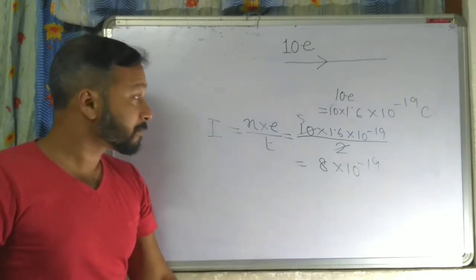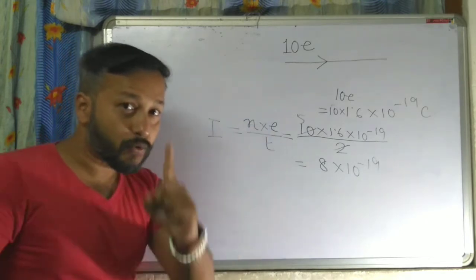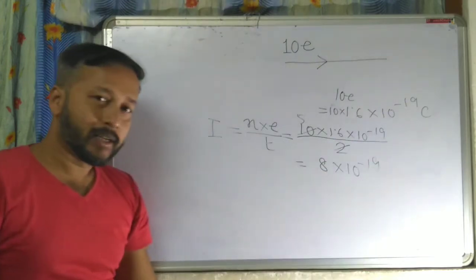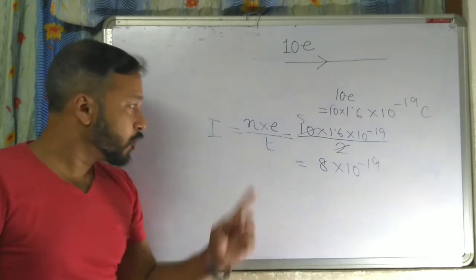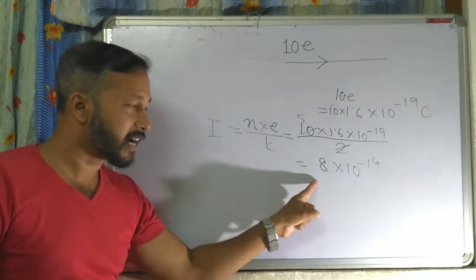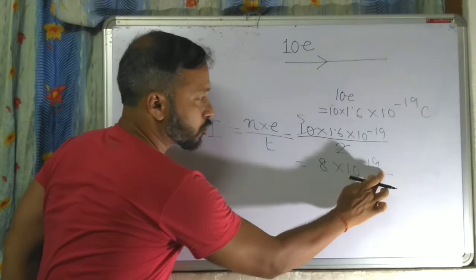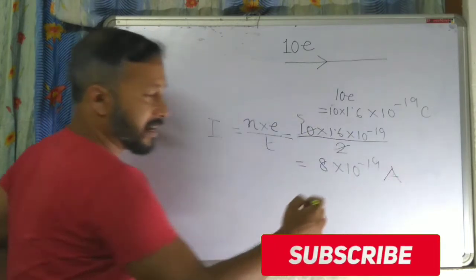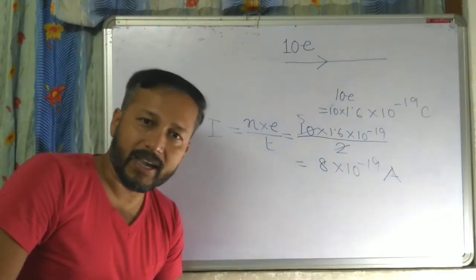N is the number of electrons. E is the charge of one electron, with unit coulomb. T is time. So I equals NE by T. After calculation, this is the amount of current. The unit of current is A, meaning ampere.